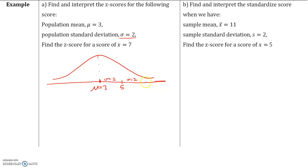Our standard deviation is 2, so if we go two standard deviations, we will have 7. The value of 5 is 1 standard deviation away from the mean; the data value of 7 is 2 standard deviations away from the mean. From 3 to 5 is one standard deviation; from 5 to 7 is two standard deviations. Going the other way, 3 minus 2 gives you 1, which means 1 is one standard deviation away from the mean. Then 1 minus 2 is negative 1, so negative 1 is two standard deviations away from the mean.